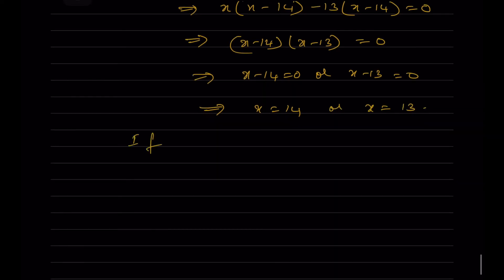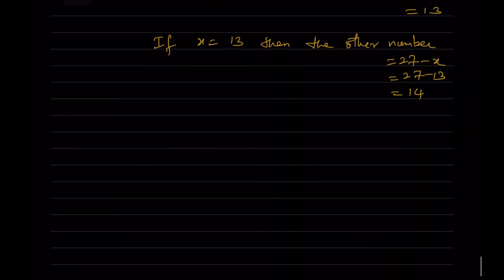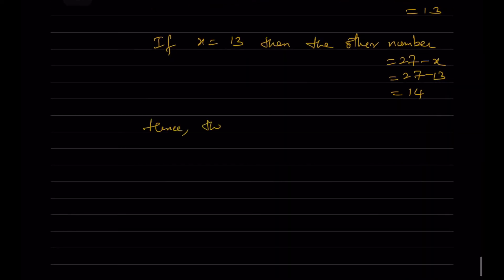If x = 14, the other number is 27 - 14 = 13. If x = 13, the other number is 27 - 13 = 14. Hence the required two numbers are 13 and 14.